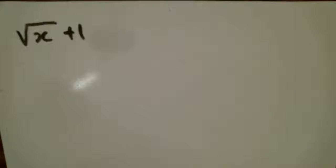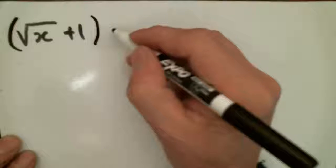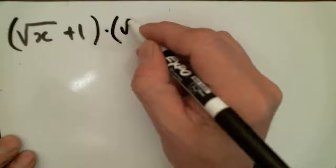and what we'd really like to do is find a way to deal with that radical and make it go away, besides just erasing it. And so what we can actually do is multiply this expression by its conjugate.